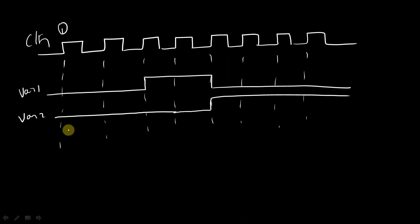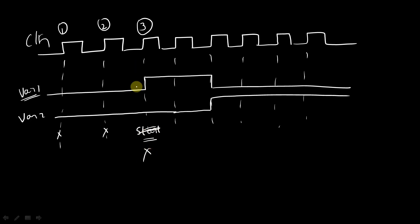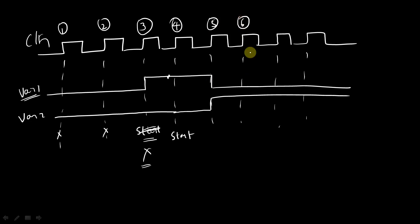So at the first clock edge, your assertion will get failed. At the second clock edge, since variable one is low, here also it is going to fail. At the third clock edge, it is also going to fail because variable one is equal to zero. But in the fourth clock cycle, the checking is going to start because the value of var one is equal to one. Now at the fifth clock cycle, one cycle has been finished. And in the sixth clock cycle, it is going to check for the value of variable two. The value of variable two is equal to high, so your assertion is going to pass here.